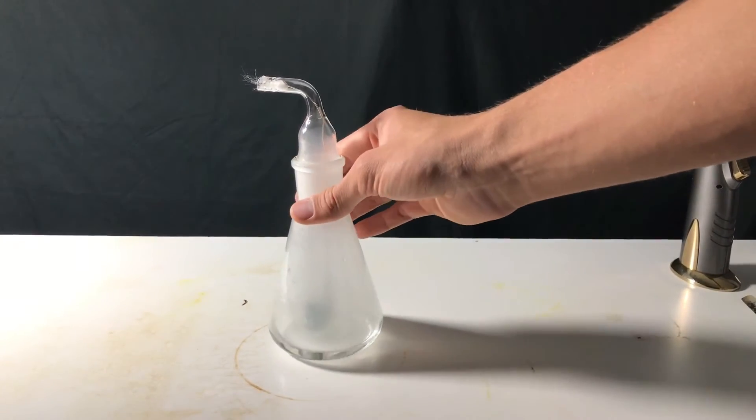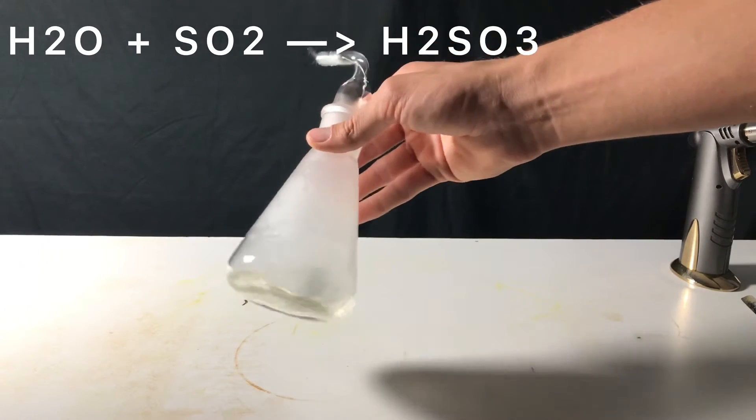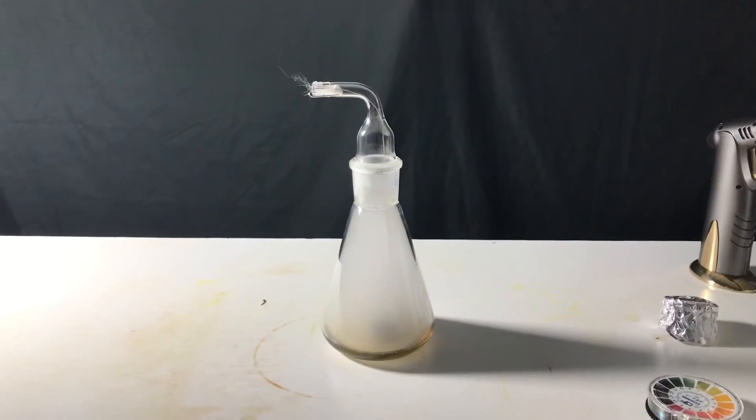After the sulfur stopped burning, the flask was swirled for a few times to dissolve the sulfur dioxide. Sulfurous acid is formed.